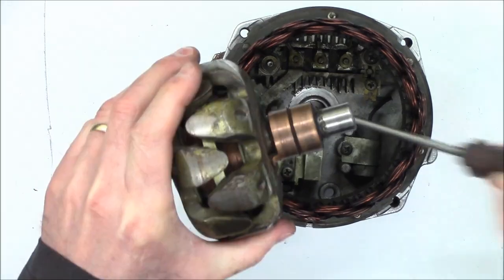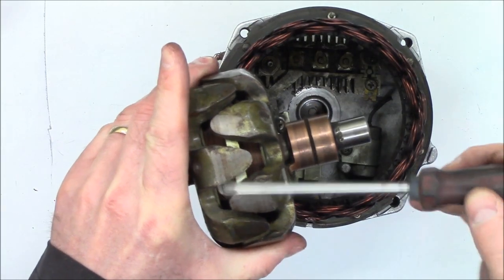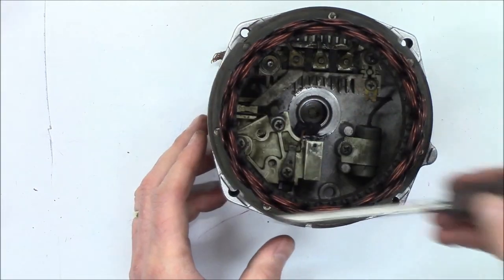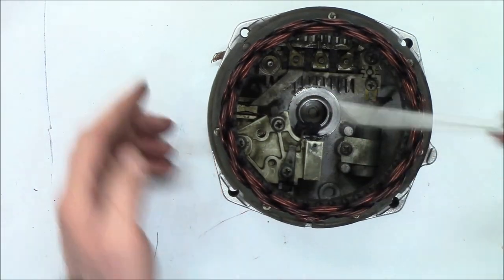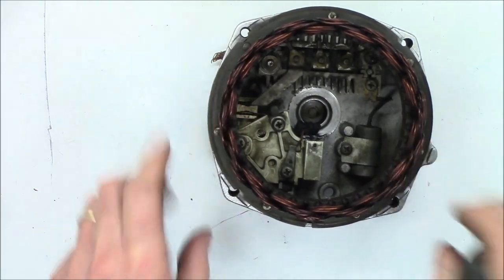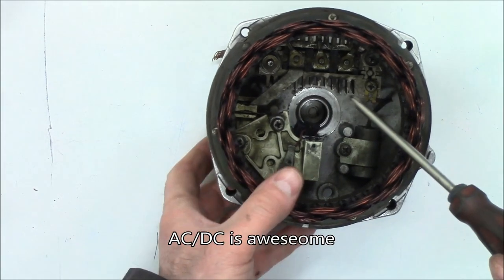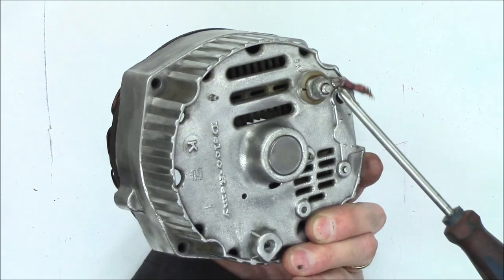So electricity comes into here, makes its way to the brushes, makes the connection to the armature, creates a magnetic field. The magnetic field goes past these loops of wire. They induce electricity. Six diodes rectify the AC, turning it into DC. And the DC comes out here.